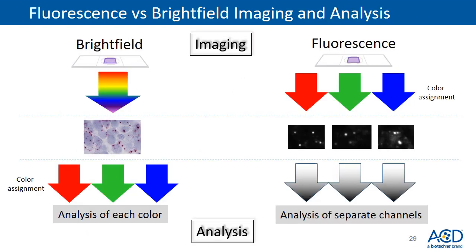For chromogenic assays, imaging is done easily using bright field microscopy technique with one merged image, but expertise is needed to perform image analysis to separate each color. In fluorescence microscopy, expertise is needed to take high quality images, but image analysis is relatively easier because the colors are already separated into different channels. In all cases, it is essential to take high quality images for image analysis.